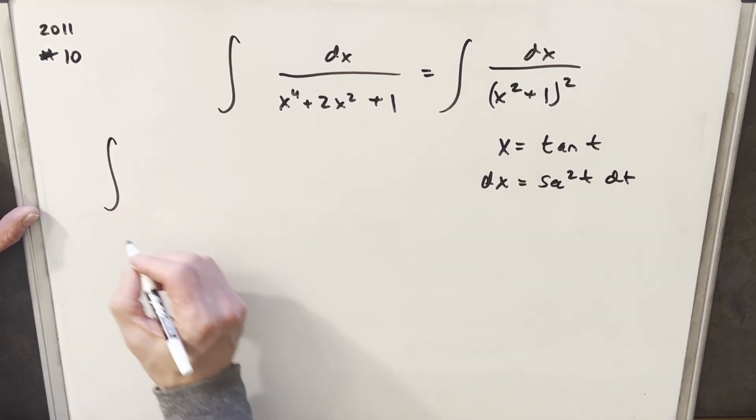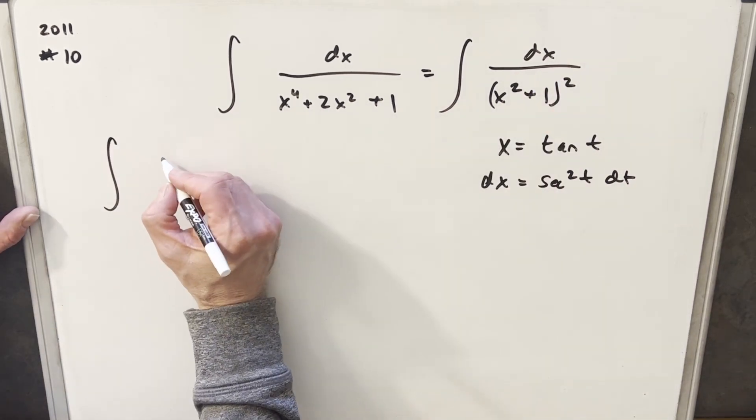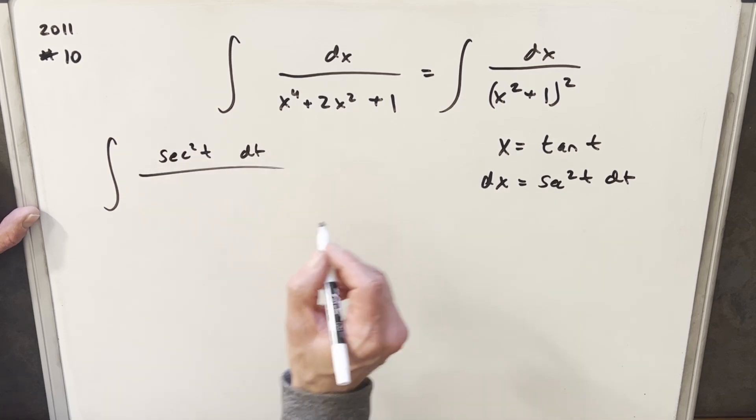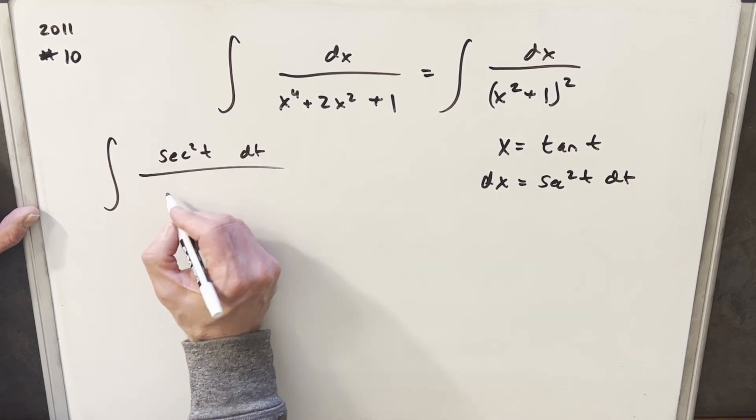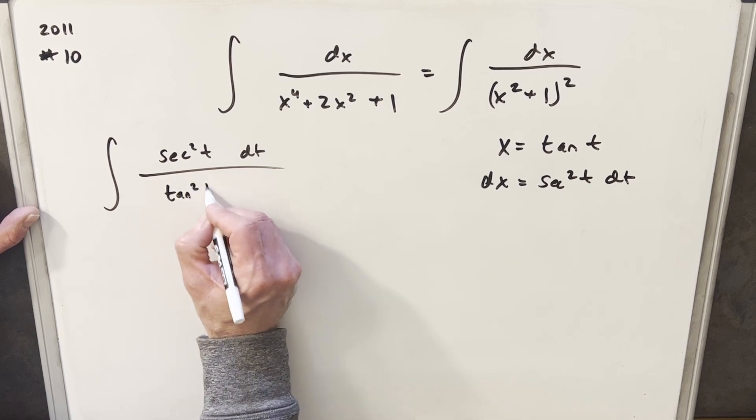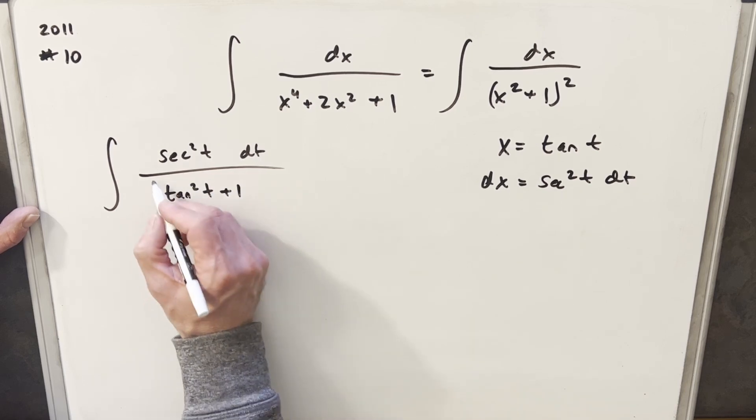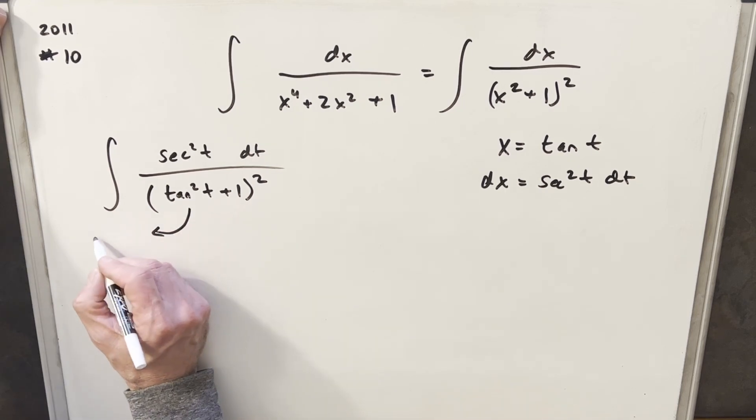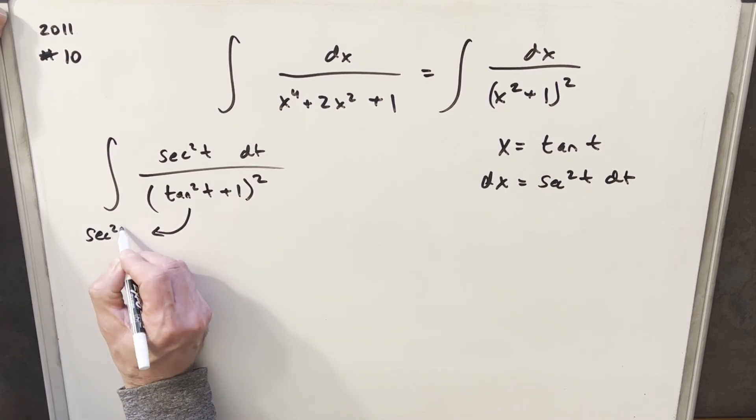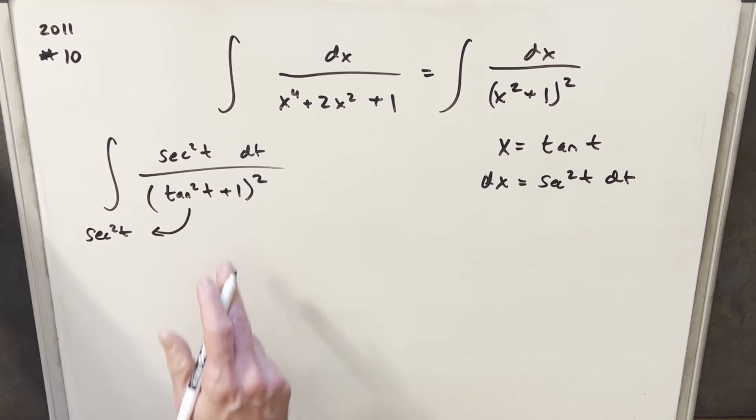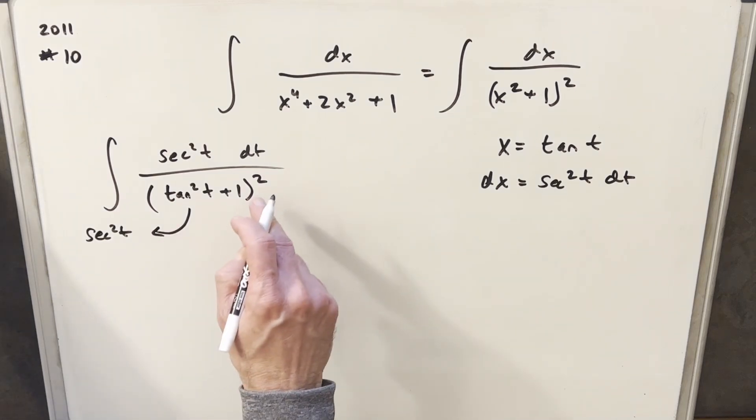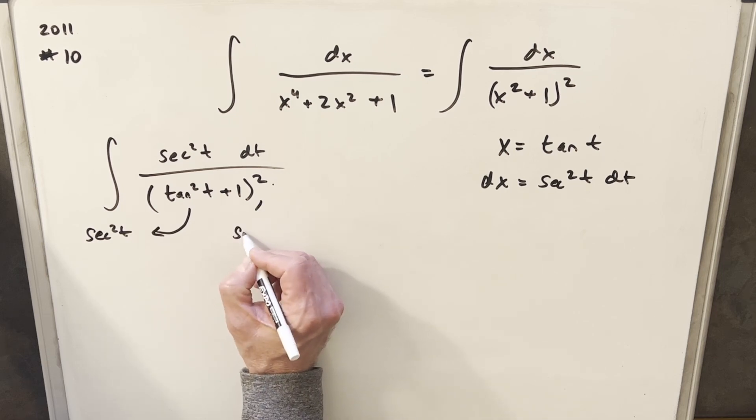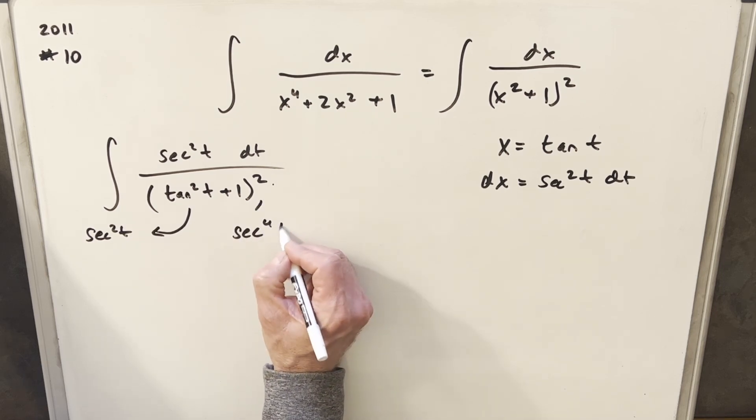Then we'll make this substitution now. So for our dx on top, we're going to have secant squared t dt. And then in the denominator, we're going to have tan squared t plus 1 all squared. Now, this piece is actually a really common identity. This is actually the same thing as secant squared t. But now we have secant squared squared, so this whole thing is actually going to be, this whole denominator is going to be secant to the fourth t.